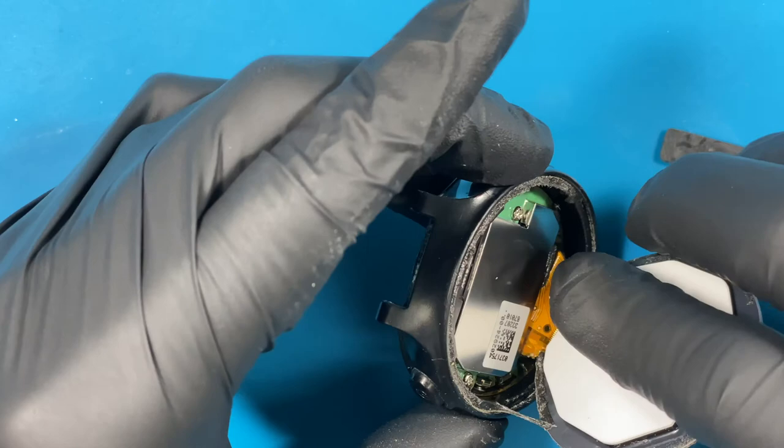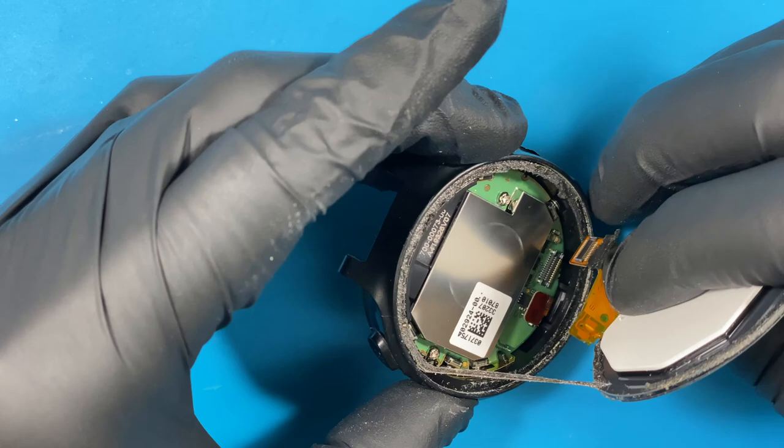Use a plastic spudger tool—don't use metal because you could short something out. Plastic is always better. There's a little bit of adhesive on the back of the LCD cable. Let's go ahead and remove that.